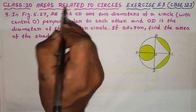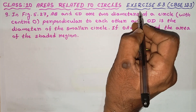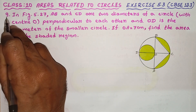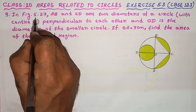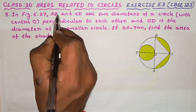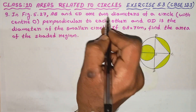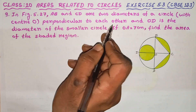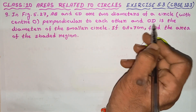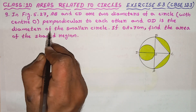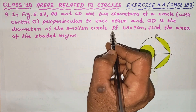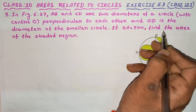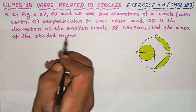Clause 10, areas related to circles. Exercise 5.3, problem 9 solve. In figure 5.27, AB and CD are two diameters of a circle perpendicular to each other and OD is the diameter of the smaller circle. If OA is equal to 7 cm, find the area of the shaded region.